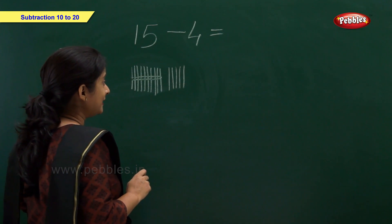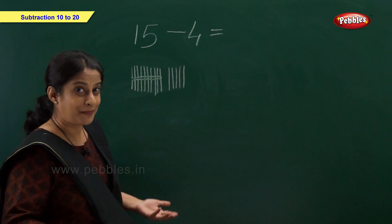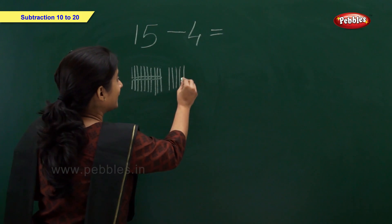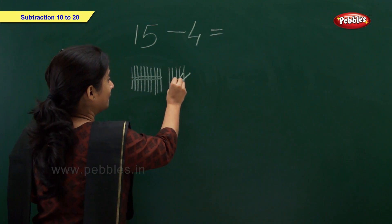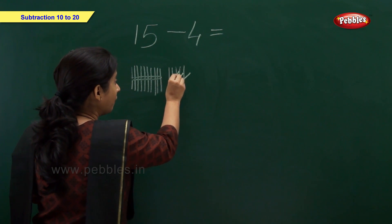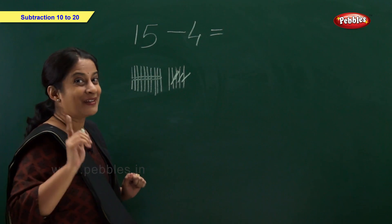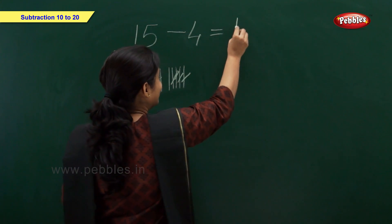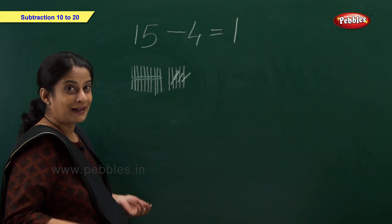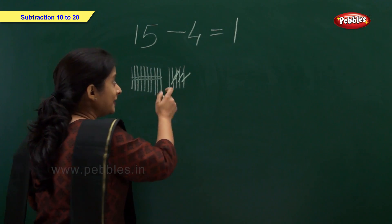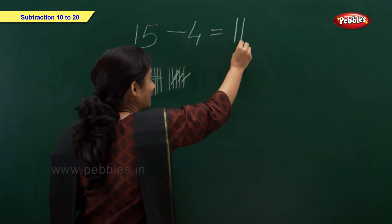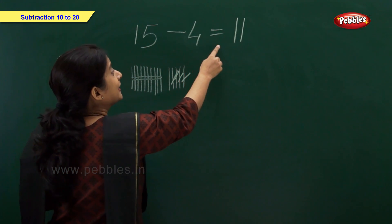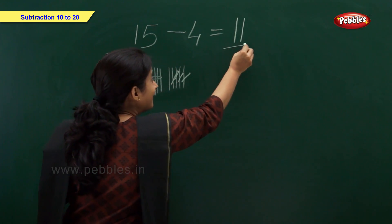So now friends, let's take away or subtract 4 from 15: 1, 2, 3, 4. Now how many remaining? Let's count — 1 ten, and how many ones? 1 one. So friends, 15 minus 4 is equal to 11.